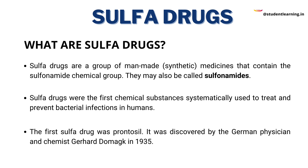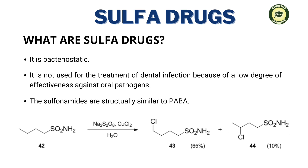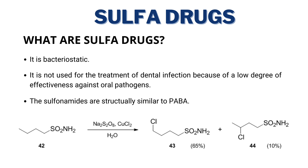The first sulfa drug was prontosil. It was discovered by the German physician and chemist Gerhard Domagk in 1935. Sulfonamide antimicrobials are bacteriostatic — that is, they stop bacteria from reproducing but don't necessarily kill them — and work by interfering with the synthesis of folic acid in bacteria, which is essential for nucleic acid formation and ultimately DNA and RNA.